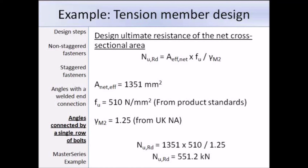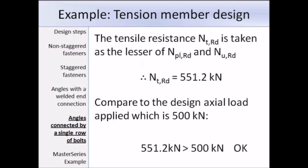The overall tensile resistance is taken as the lesser of the design plastic resistance and the design ultimate resistance of the net cross-sectional area. In this case the smaller of the two is the design ultimate resistance, equal to 551.2kN. The last thing we need to check is whether the resistance is larger than the design axial load. The design axial load is 500kN and our resistance is 551.2kN, therefore this section is acceptable.